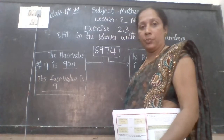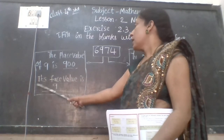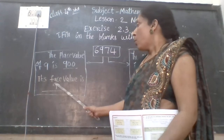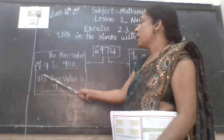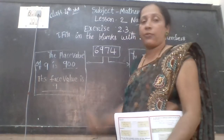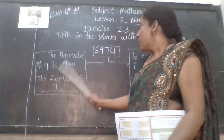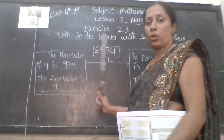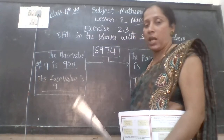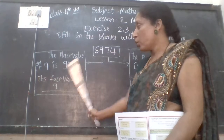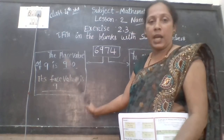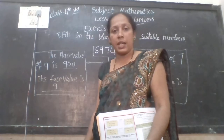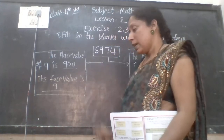Understood? Next — its face value is dash. Face value means 9's own value. Where is 9? 9 is in the hundreds place, but there is no change in face value. So you have to write 9 itself. Is it right? Did you get it? Yes, next.